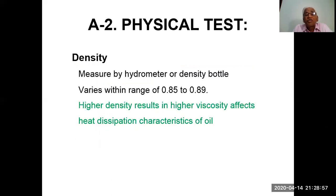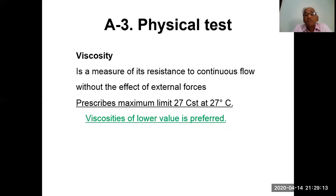Density is measured by hydrometer or density bottle and varies within a range of 0.85 to 0.89. Higher density results in viscosity effects and affects heat dissipation characteristics of the oil. Viscosity is a measure of resistance to continuous flow without the effect of external forces. The prescribed maximum limit is 27 cSt at 27°C; a lower value of viscosity is preferred.